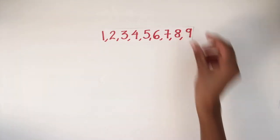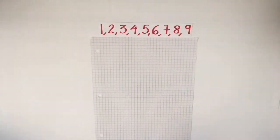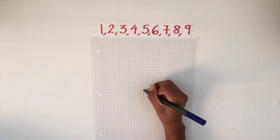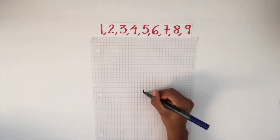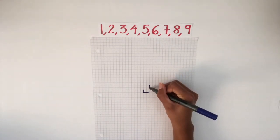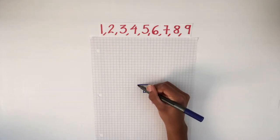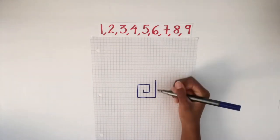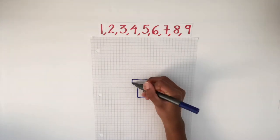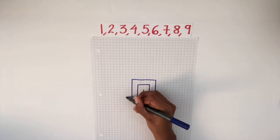For the first try, let's focus on the numbers 1 through 9. We are going to draw a line 1 unit long and then turn our marker to the right and draw another line as long as the next number, which in our case is 2. We will continue on until we have reached 9. Remember, always change directions between each number, otherwise the pattern will not work.